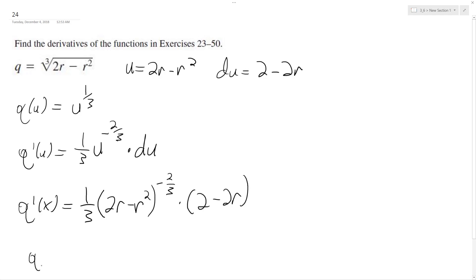And if we want to take this a little bit a step further, we can just do this. So 2 minus 2R over 3, that's the 1 third, and then quantity 2R minus R squared raised to the 2 thirds. And that's it.